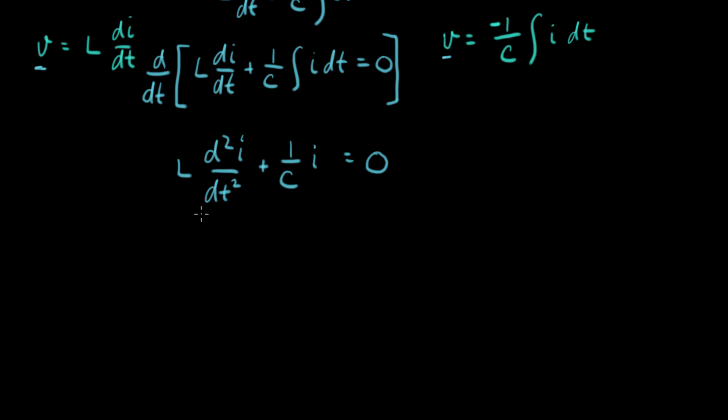So this is now the differential equation for the LC circuit. And it's called, it has a name. It's called a second order homogeneous ordinary differential equation. It's a differential equation because it has derivatives in it.